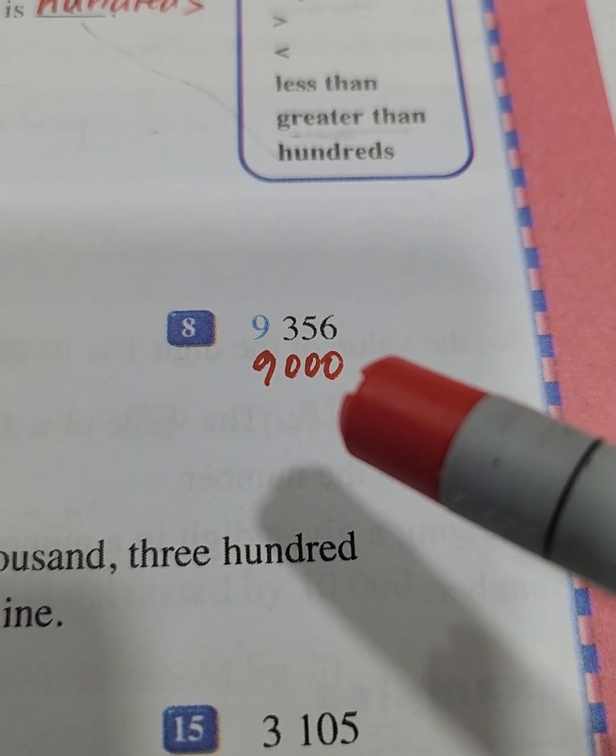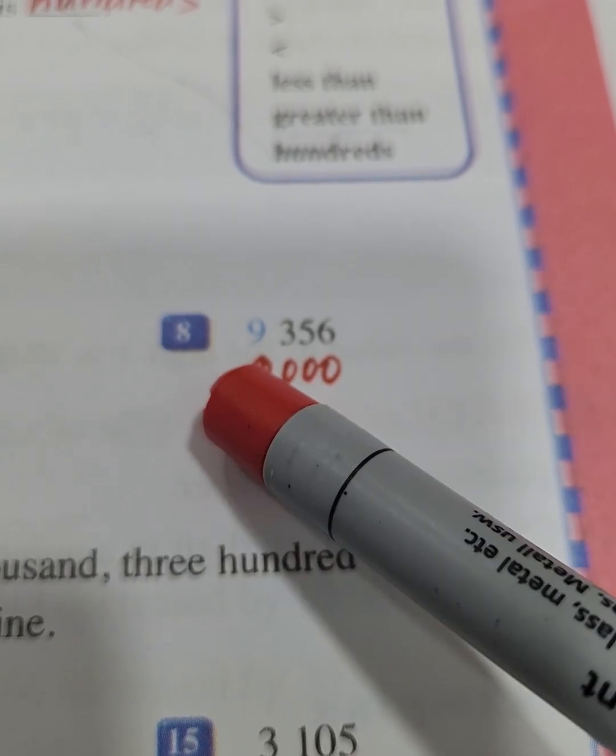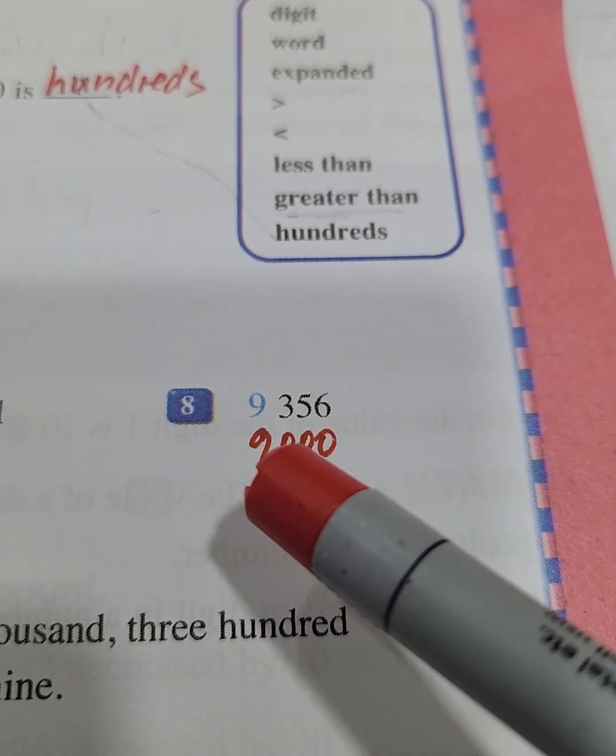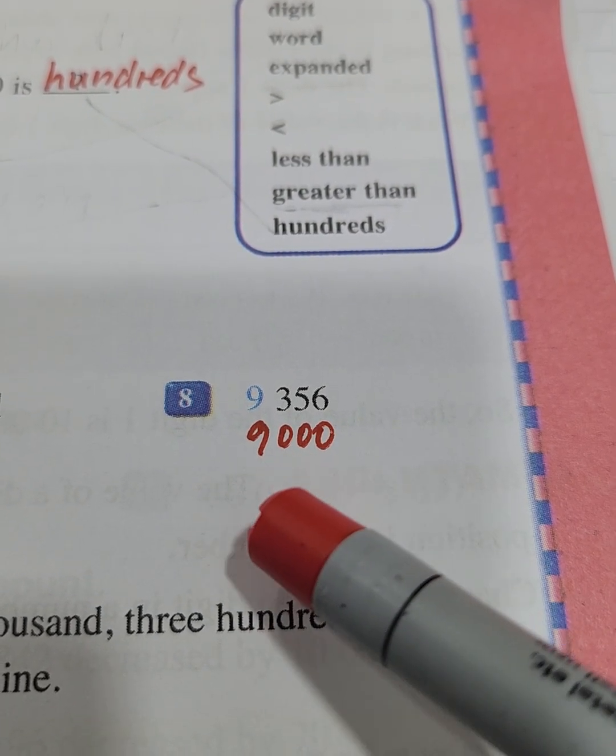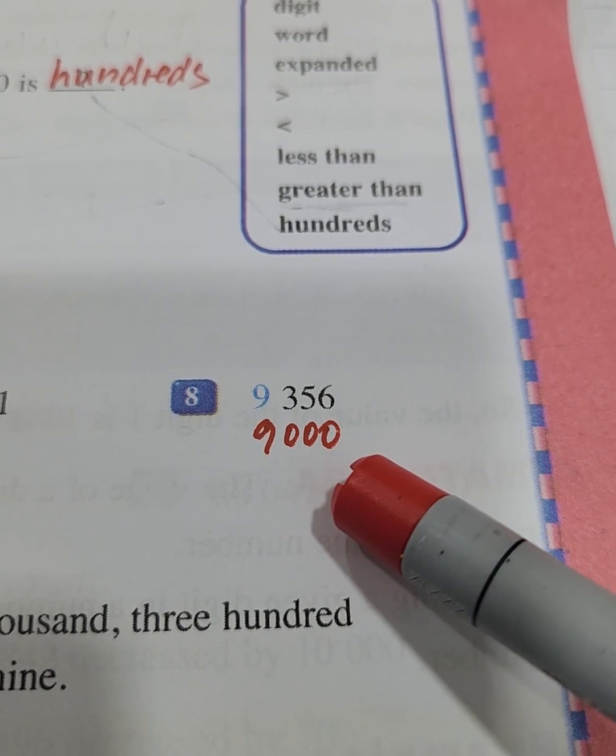We see that we are on the place of hundreds. The place of digit 9 is in the place of thousands and its value is 9000.